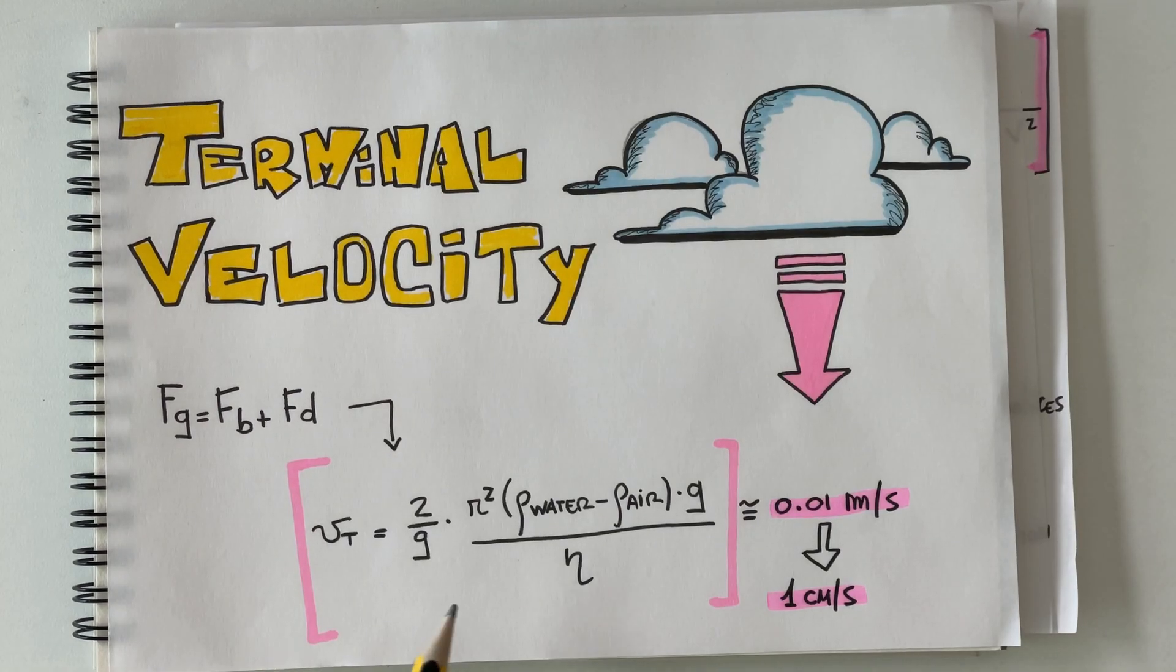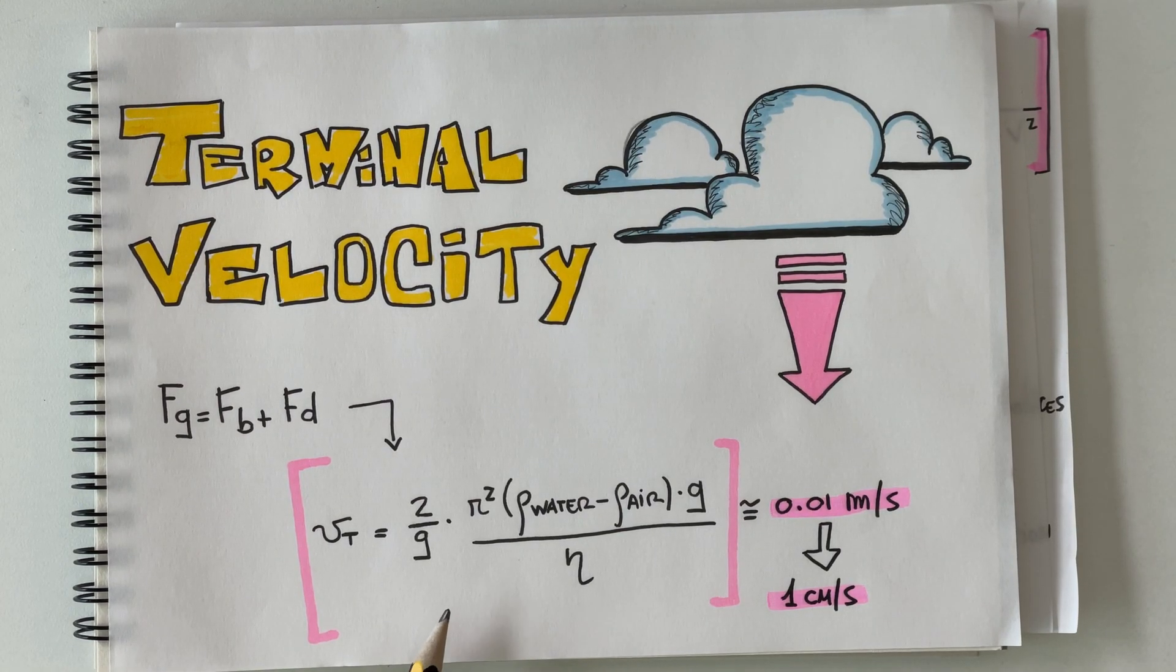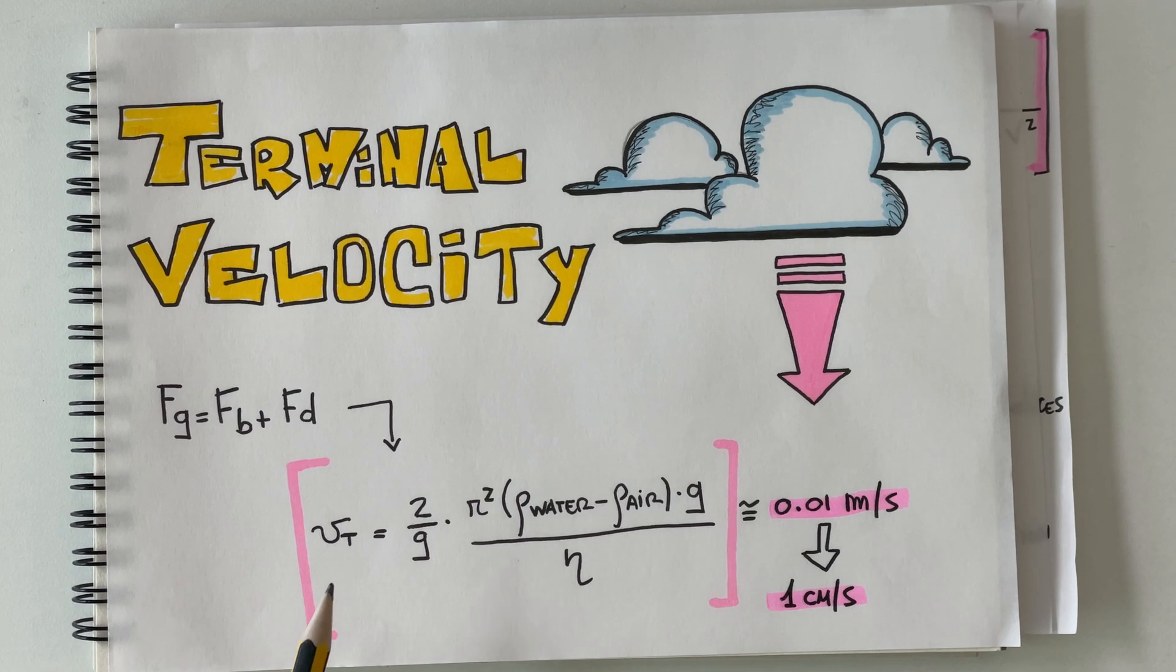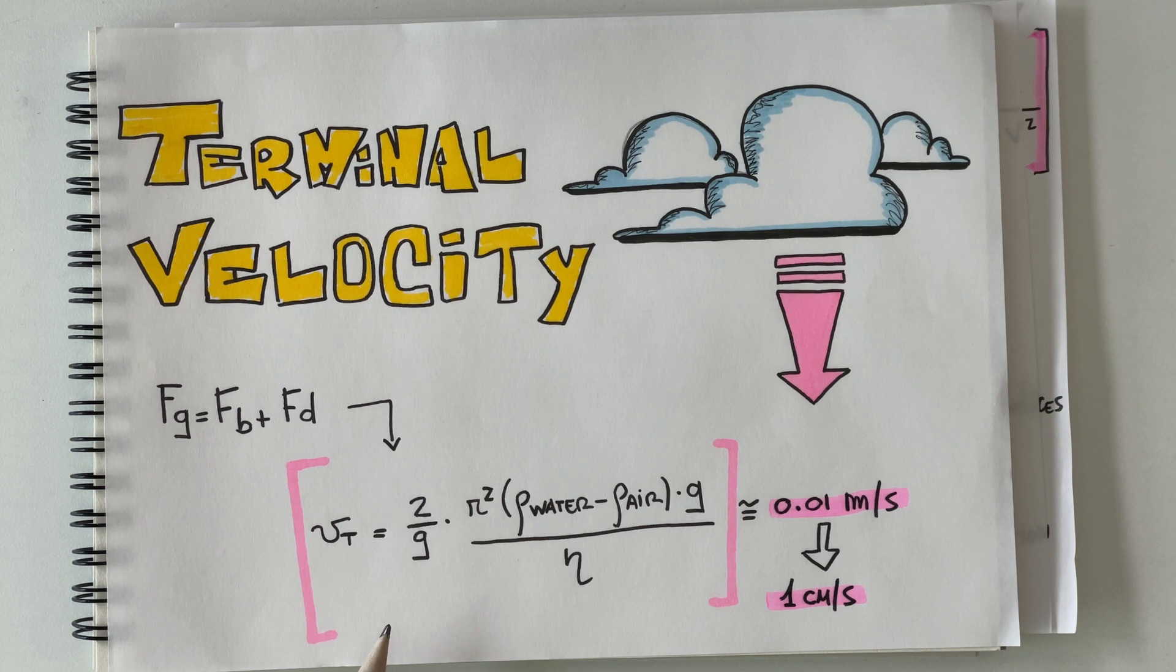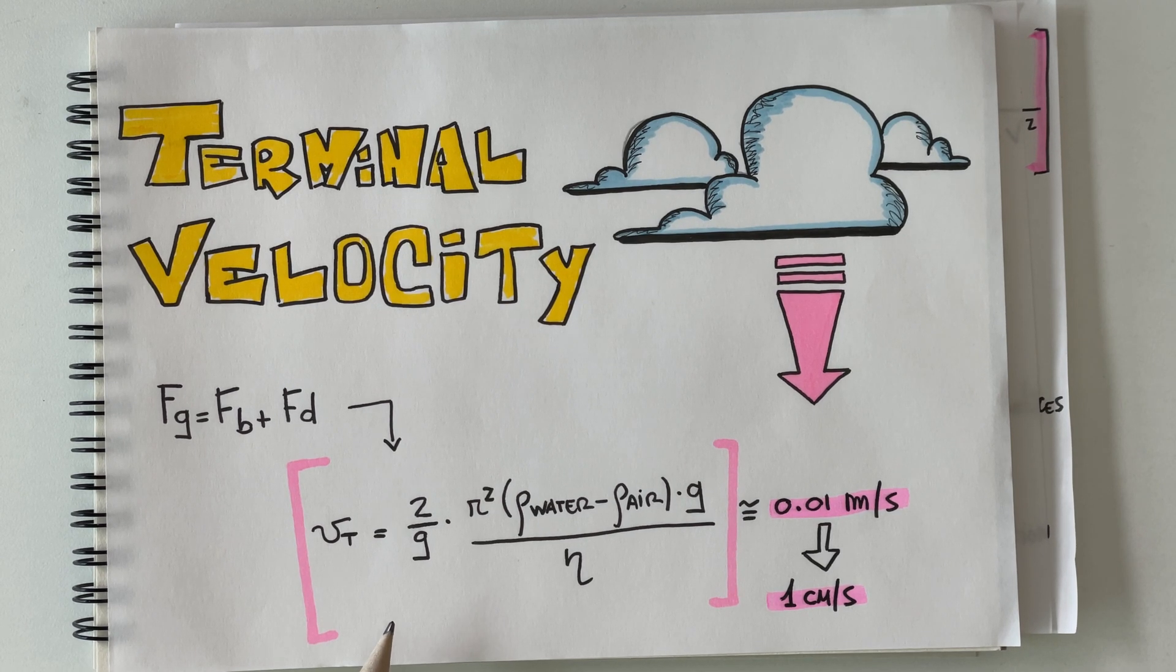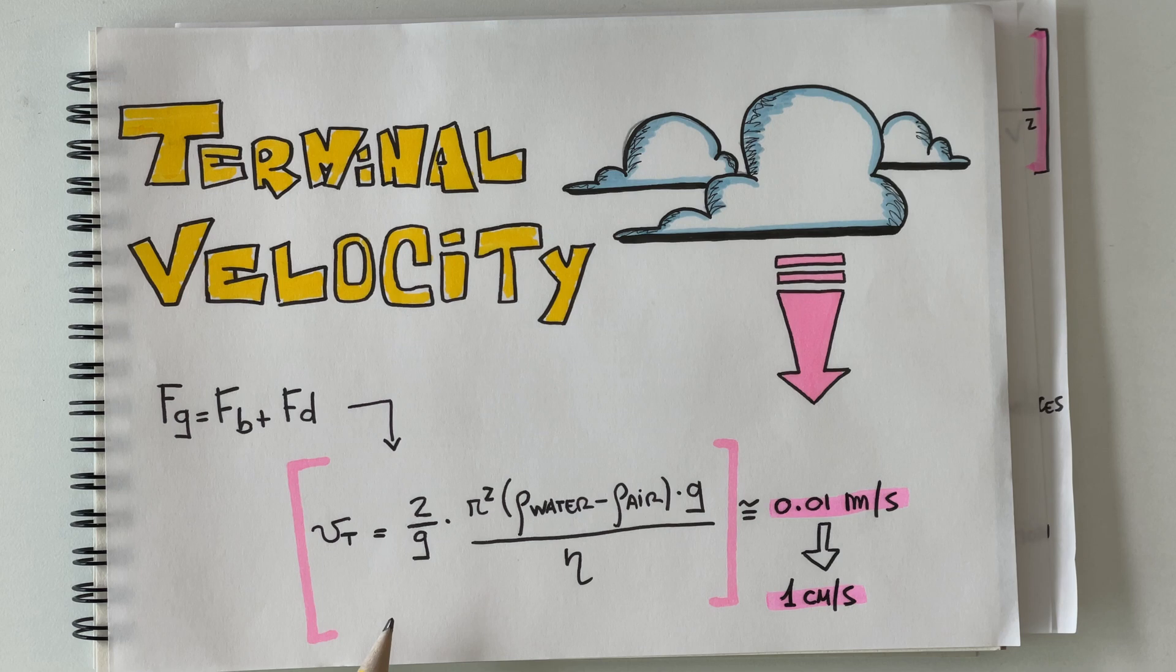So to calculate the terminal velocity of the cloud we need a few key parameters. First we need the density of air and water. Second we need the viscosity of the air, and lastly we need the radius of a single water droplet that makes up the cloud.